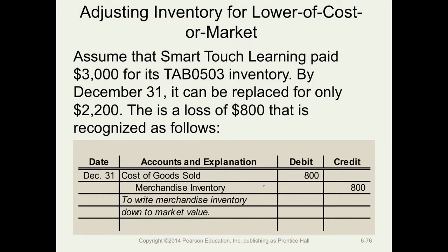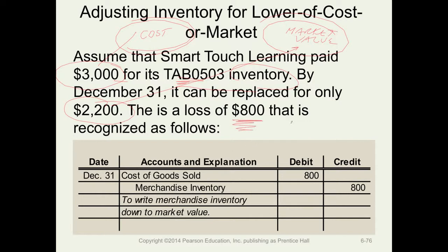Assume that SmartTouch paid $3,000 for its tablet — that is the cost in inventory. Right now, the current replacement cost is $2,200, and that's the market value. So cost is $3,000, market is $2,200, and therefore there is a loss of $800. We have to recognize the loss on the income statement in the period in which it becomes evident. Here, we debit cost of goods sold and credit merchandise inventory for $800. This will lower net income, and inventory on the balance sheet has been reduced.